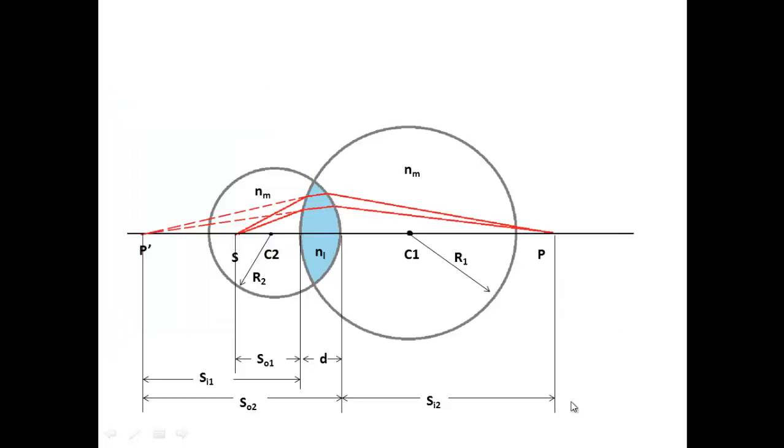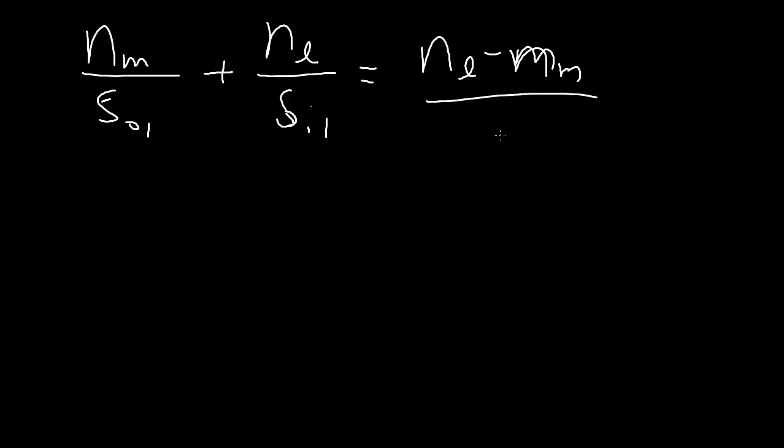So putting it all back, we can start to analyze the system with the formula that we just had. Let's sub in everything for the first interface. For the first interface we have Nm over SO1 plus Nl over S image 1 is equal to Nl minus Nm over R1, call this equation 1.